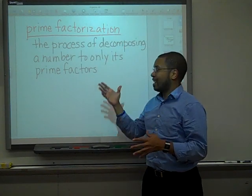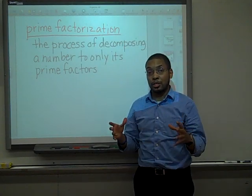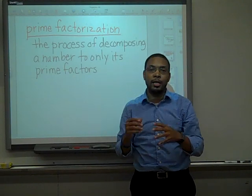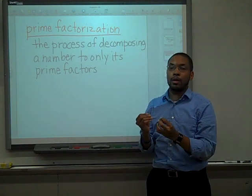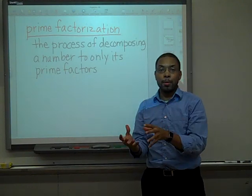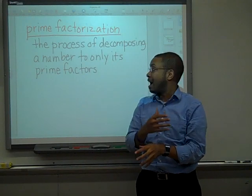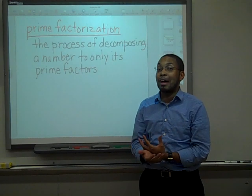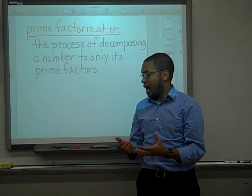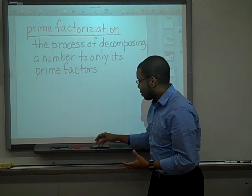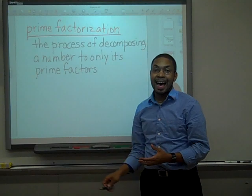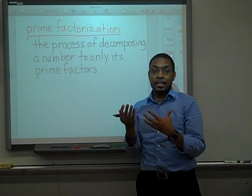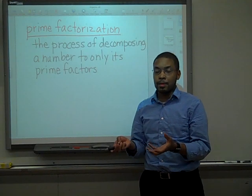Right now, I'd like to explain what prime factorization is. Prime factorization is the process of decomposing — that means breaking down a number into only its prime factors. In order to get prime factors, you have to know what the prime numbers are. Prime numbers are numbers that only have that number and 1 as factors.